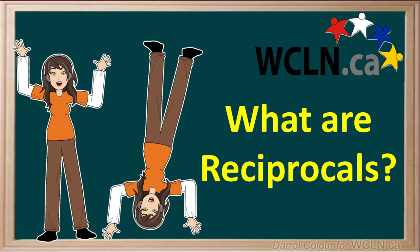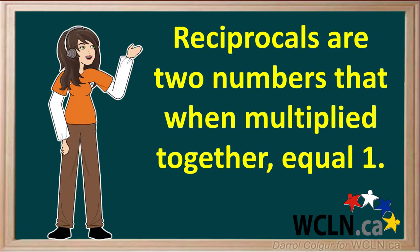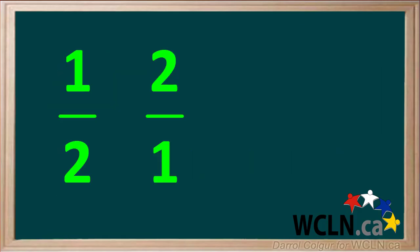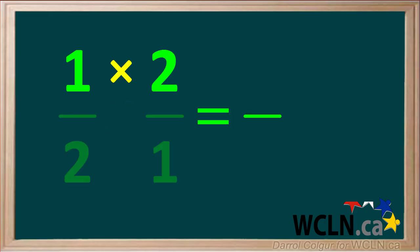Let's talk about reciprocals and what they are. Reciprocals are two numbers that when multiplied together equal 1. For example, let's take the two fractions 1/2 and 2/1 and multiply them. Multiplying the numerators, 1 times 2, we get 2.